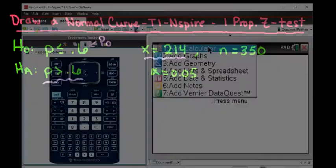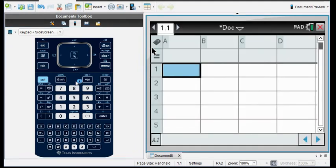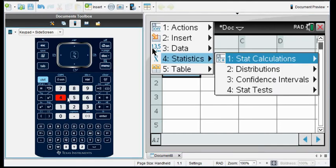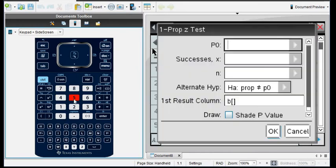So let me go ahead and grab my calculator. What I'm going to do for this one is instead of adding a calculator, I'm going to run this in a list and spreadsheet. If you want to draw the picture, you have to run it in the lists and spreadsheets. Then you're going to hit menu and option for statistics. Then you're going to go to option for stat tests. For this one, we are running the 1 proportion z test, which is number 5.